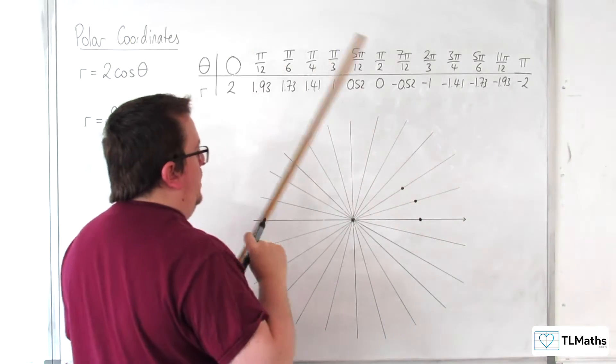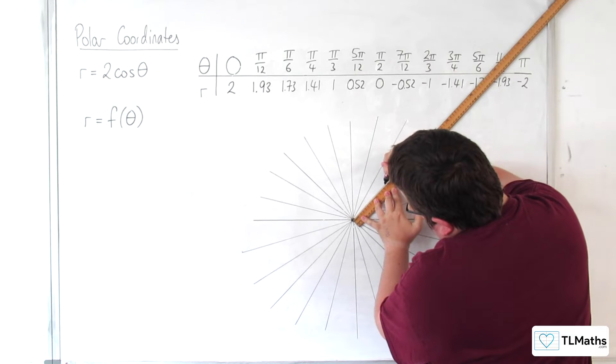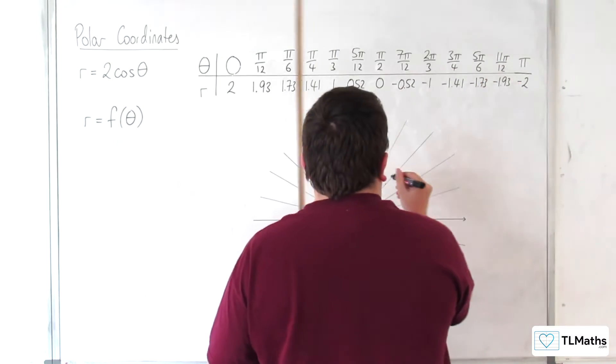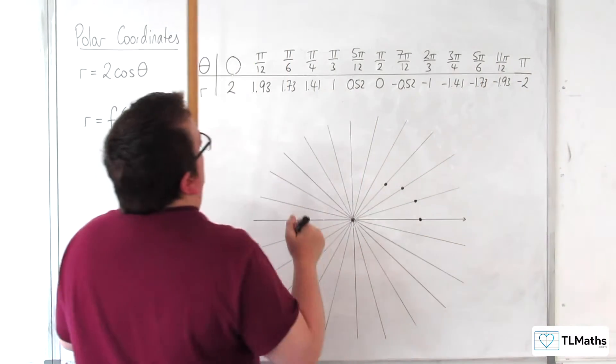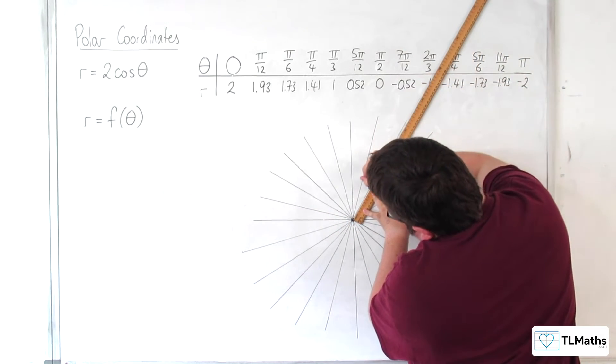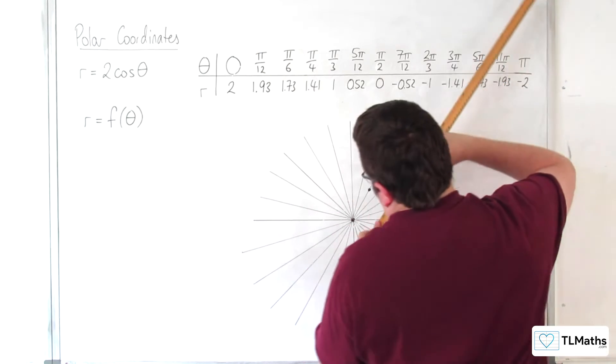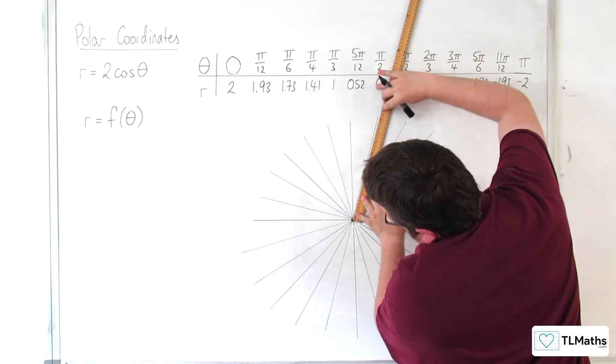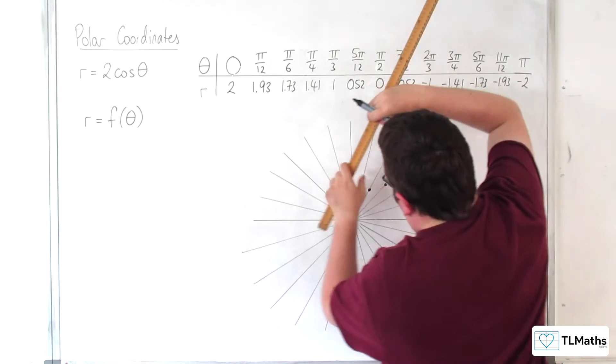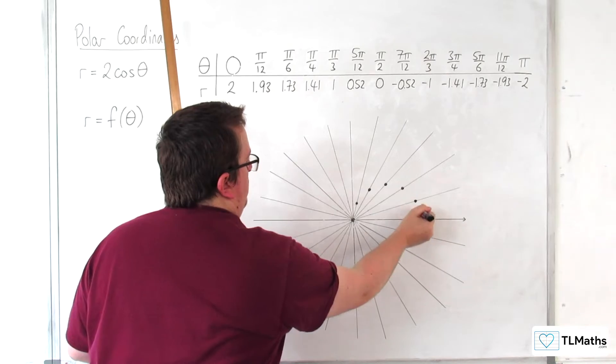Then we've got 1.73, so 17.3 centimeters, about there. Then we've got 1.41, so 14.1 centimeters. Then 0.52, just about there. Then 0.52, just about there. So we can see it's coming around this way.